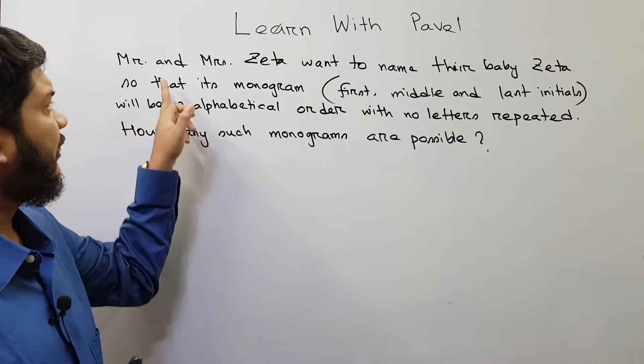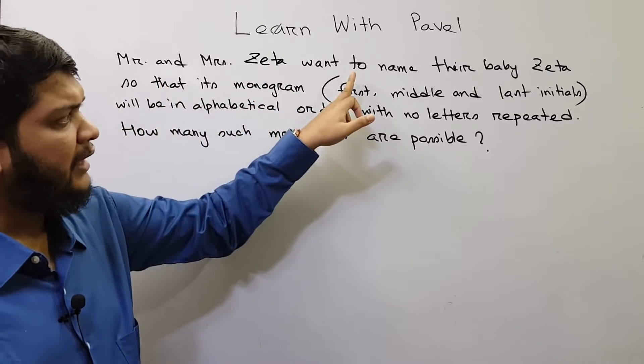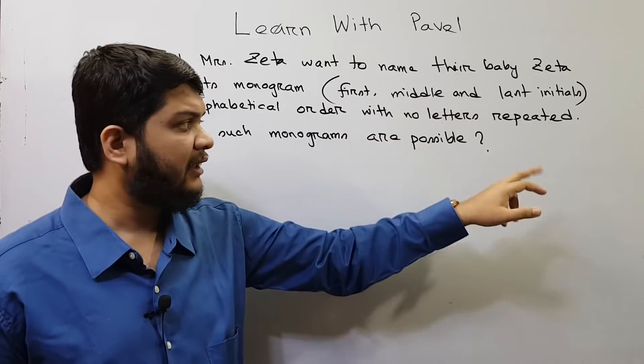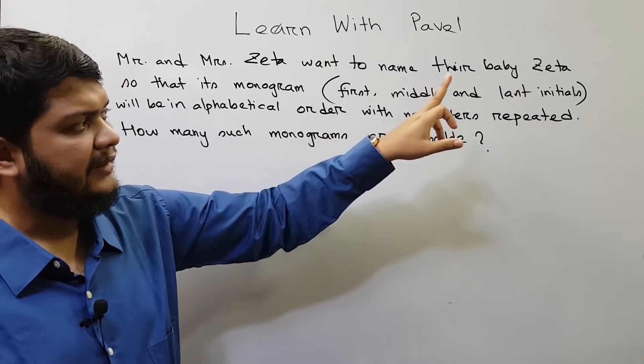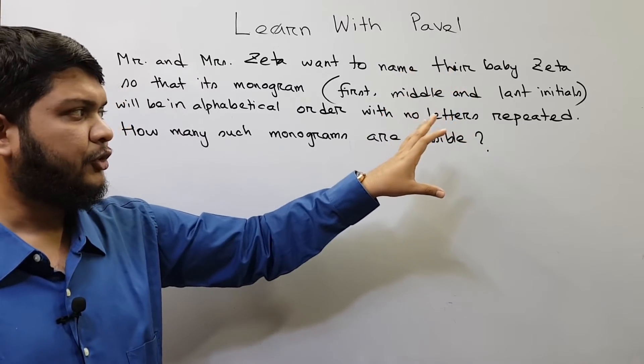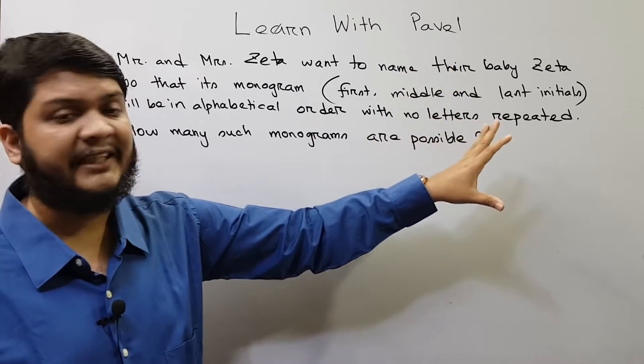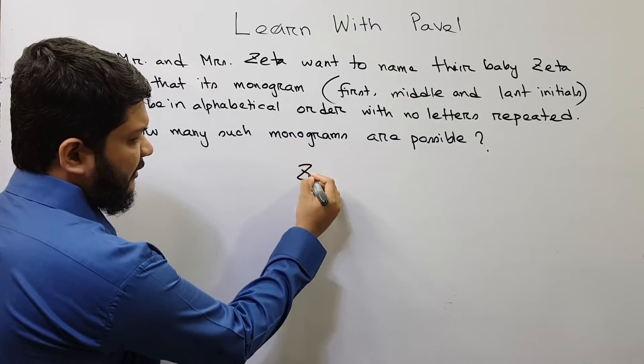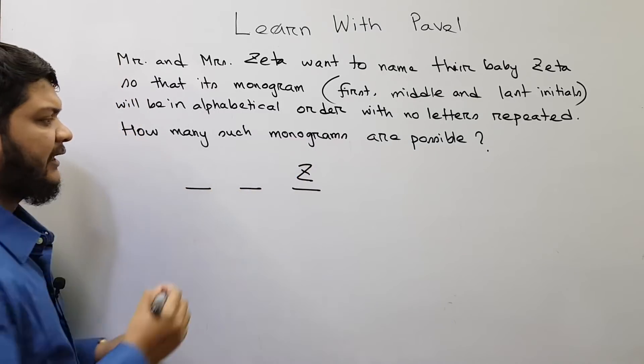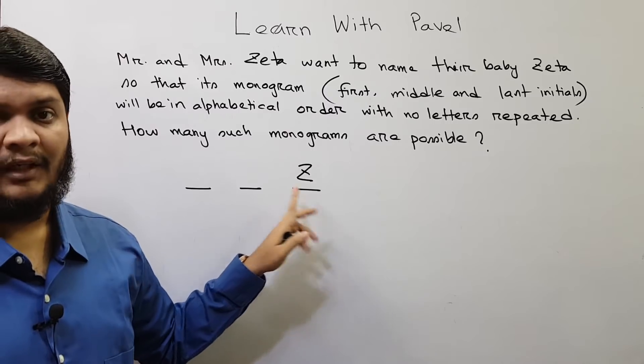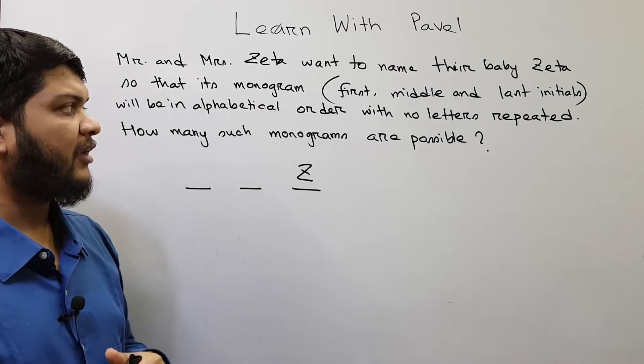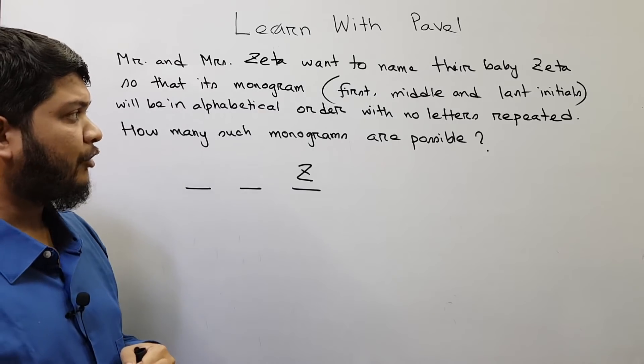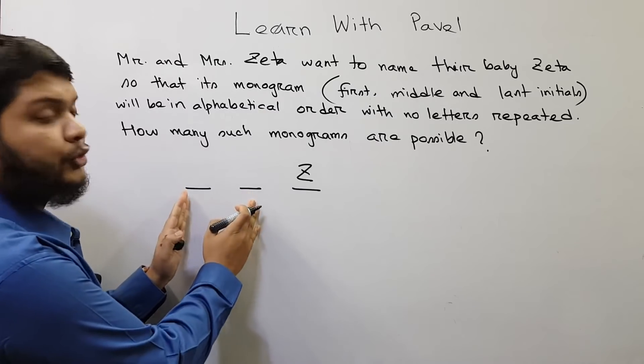Mr. and Mrs. Zeta will be naming their baby Zeta, that means the last name is Zeta, so that is fixed. So last name is Zeta, that means the last initial is already Z. So we already know that. Now we need to find out number of arrangements for the first two parts.